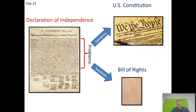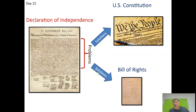To be clear: the Declaration of Independence points out the problems we had under Great Britain, and our Constitution and Bill of Rights provide many of the solutions to those problems we experienced under our previous government. That's a quick overview of the Constitution and the key things you need to know.